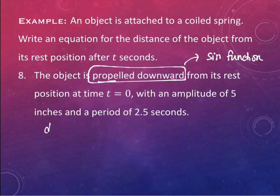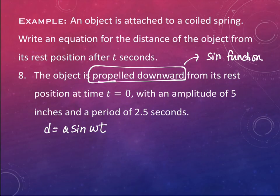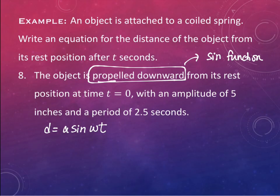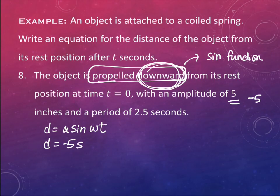So we have d = a·sin(ωt). It's propelled downward at time t = 0 with an amplitude of five inches. Downward means negative, so a = -5. Our equation so far is d = -5·sin(ωt).